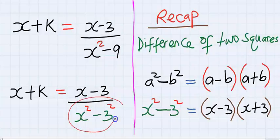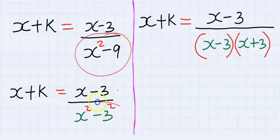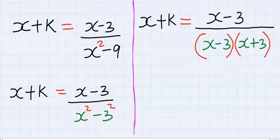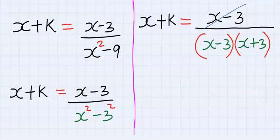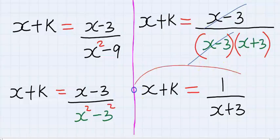Next, I'm going to modify this denominator respecting the rules of difference of two squares. This is the same as this. Next, x minus 3 and x minus 3 can cancel out and this will remain.